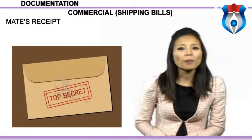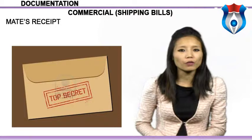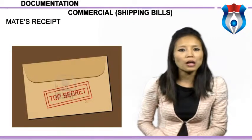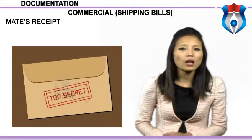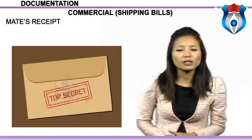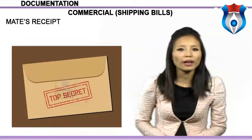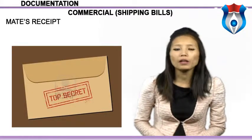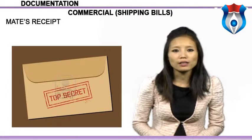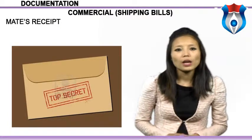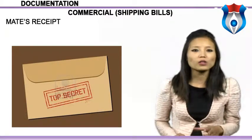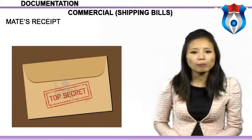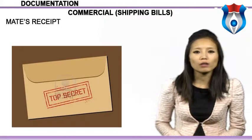A Mate's Receipt is a document originally issued by the first mate of the ship, who was the officer responsible for cargo. The document would be issued after the cargo was tallied into the ship by the tally clerk. The shipper or his representative would then take the Mate's Receipt to the master or the agent to exchange it for a bill of lading, which would incorporate any conditions inserted into the Mate's Receipt. In modern days, the Mate's Receipt is not often signed by the mate of the ship, but by someone in the shore office of the shipping company or its agent, although the name of the document remains the same.